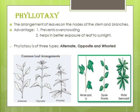Now, phyllotaxy. Many questions came about phyllotaxy. The arrangement of leaves on the nodes of the stem and branches is known as phyllotaxy — that is, the manner in which leaves are arranged on the stem. The advantage of phyllotaxy is that it prevents overcrowding and helps in better exposure of leaves to sunlight, so that sunlight falls on the leaves in a better way. Phyllotaxy is of three types: alternate phyllotaxy, opposite phyllotaxy, and whorled phyllotaxy.